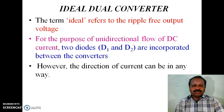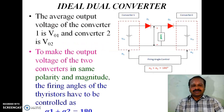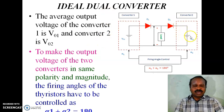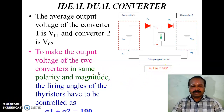The term 'ideal' refers to ripple-free output voltage. If the ripple output voltages of the two converters are of the same polarity and magnitude, the firing angle of the thyristor has to be controlled such that alpha 1 plus alpha 2 equals 180 degrees.